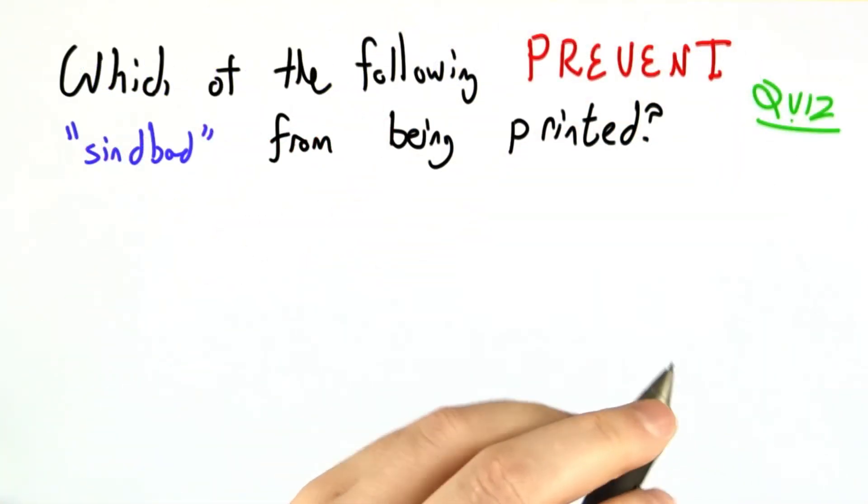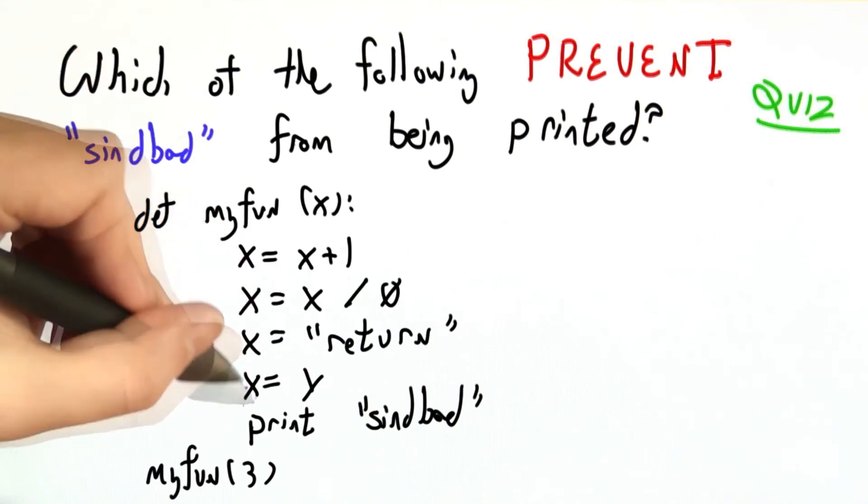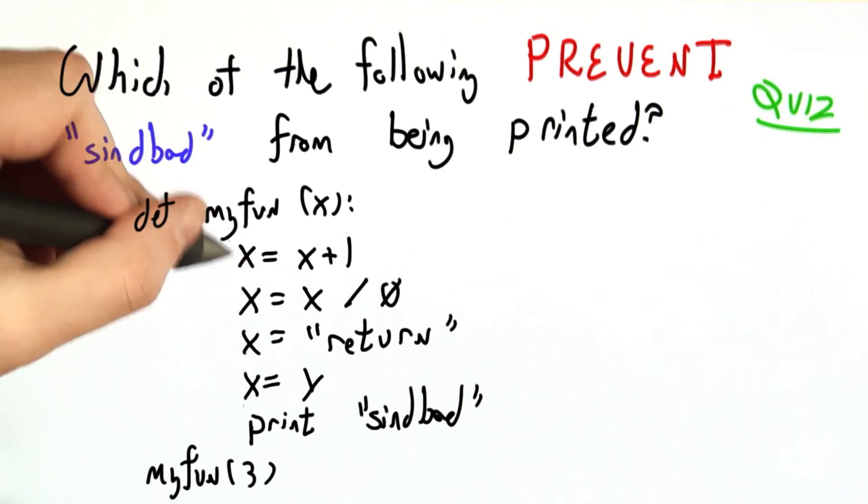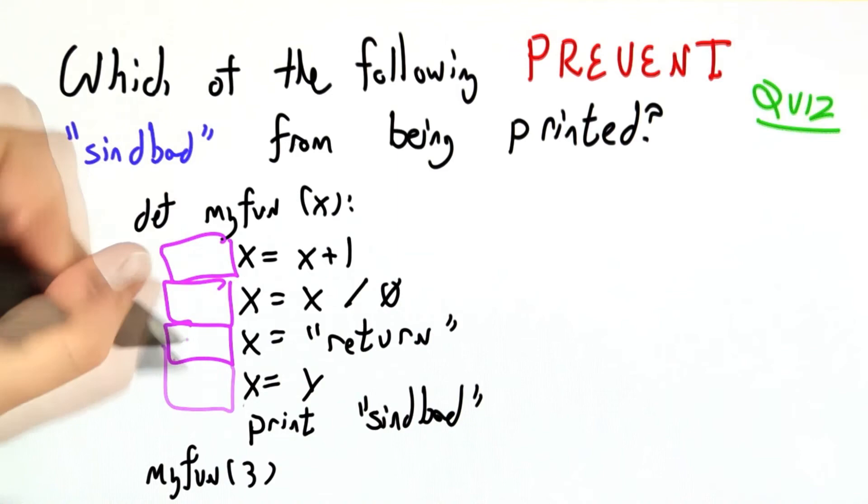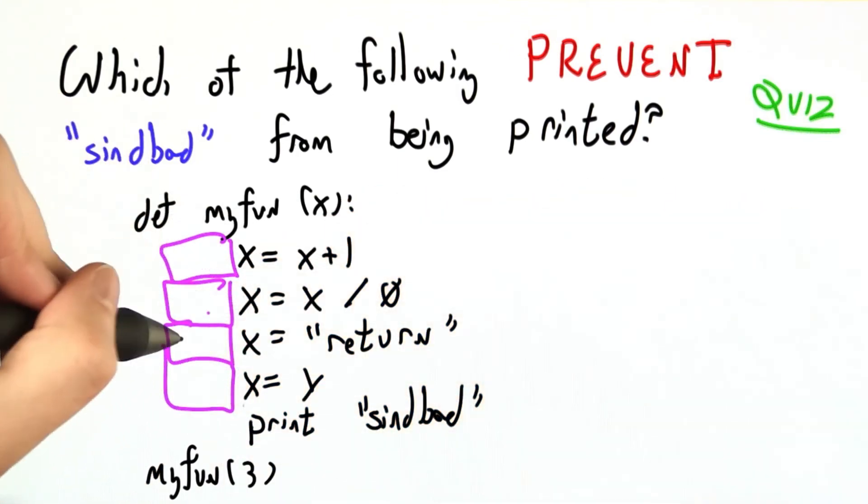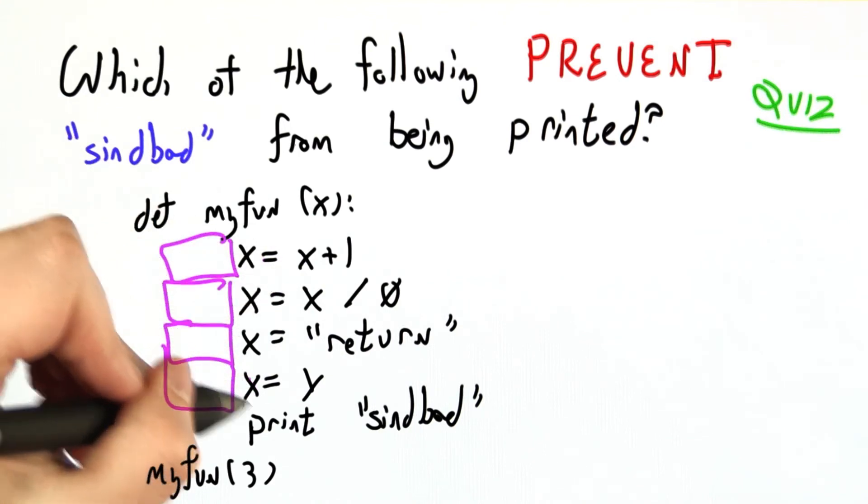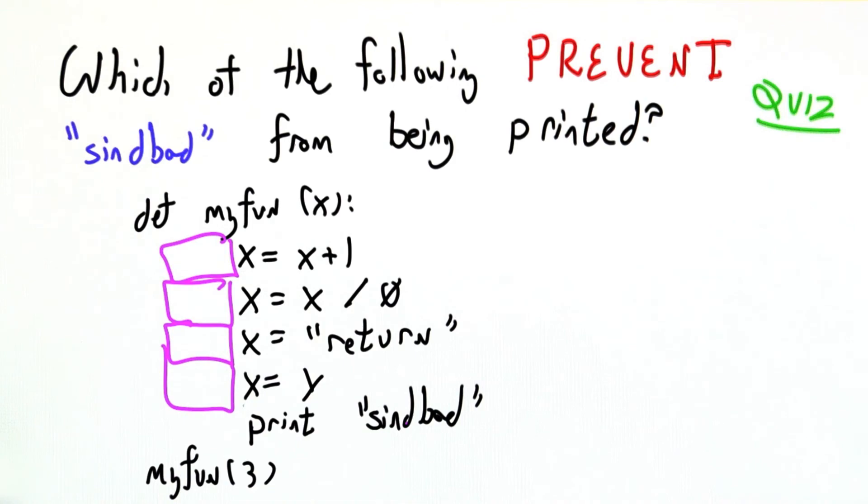Let's get a better feel for this with a bit of a puzzle. Here I've written a bit of Python code and I have four assignment statements involving x. What I'd like you to do is imagine that these assignment statements are not there, but you get to add one of them in. And your goal is to try to add in a statement that will prevent us from printing out Sinbad.